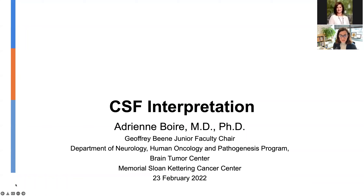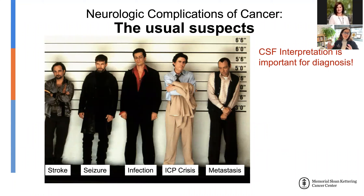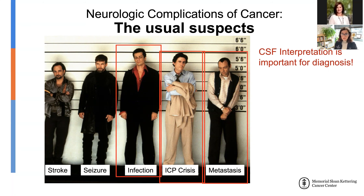I love spinal fluid, as is probably clear from either my reputation or just my raw enthusiasm for the topic. What we're going to talk about today is how to collect CSF and what to do with the spinal fluid once you get it. Part of our job as neurologists and people who care for patients with neurologic disease is to deal with a lot of the complications of cancer. The neurologic complications of cancer include stroke, seizure, infection, ICP crisis, and metastasis. CSF interpretation is actually very important for the diagnosis of infection, ICP crisis, and metastasis, so it's really part and parcel of good neurologic care for cancer patients.